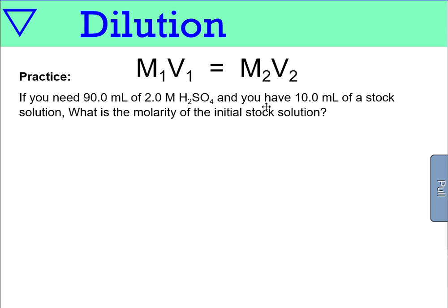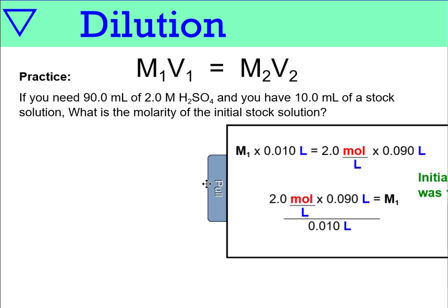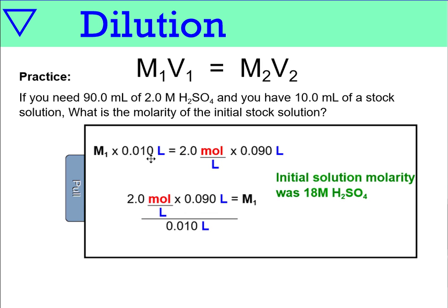So we have our final values and we have our initial volume. So we're finding our initial molarity here. So our initial molarity times the initial volume, which we said was 10 milliliters, will give us a 2 molar solution and 90 mils of it. And we set equal everything to M1 and we get an initial concentration of 18 molar. And this is actually the molarity of concentrated sulfuric acid that we buy from our vendors. And in this one we don't really need to worry about what was added because it's in the question. We need 90 mils and we have 10 mils of stock. So 80 mils of water was being added.